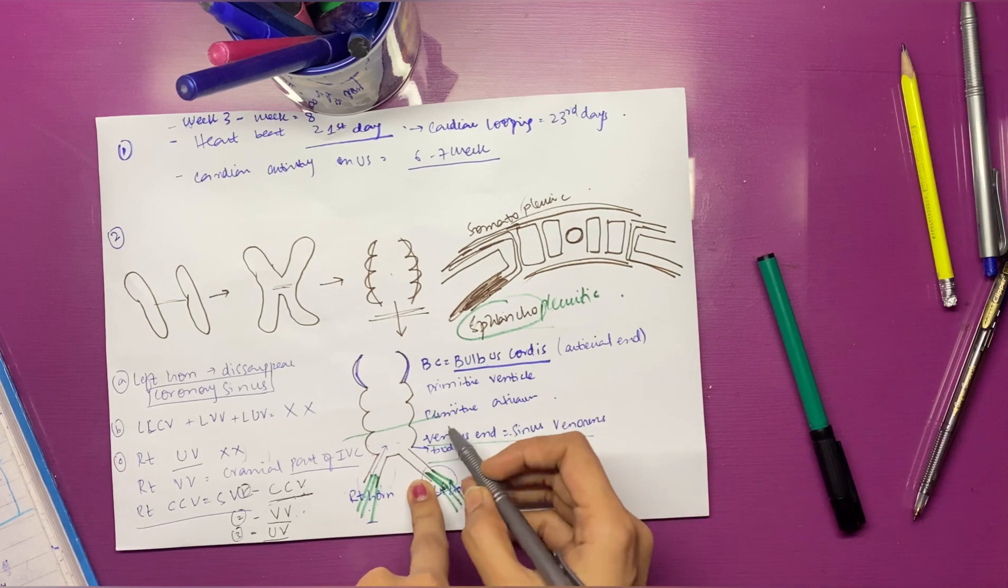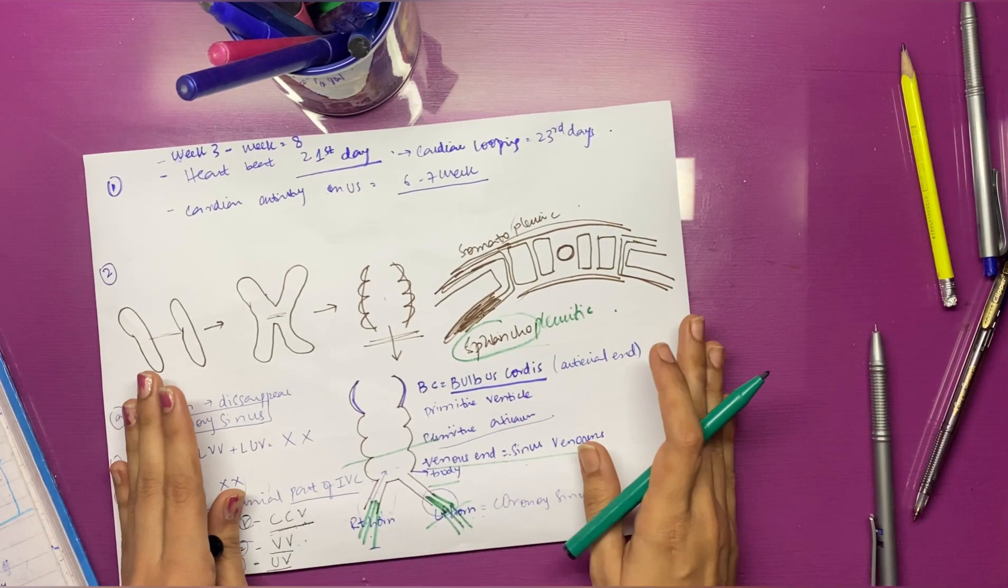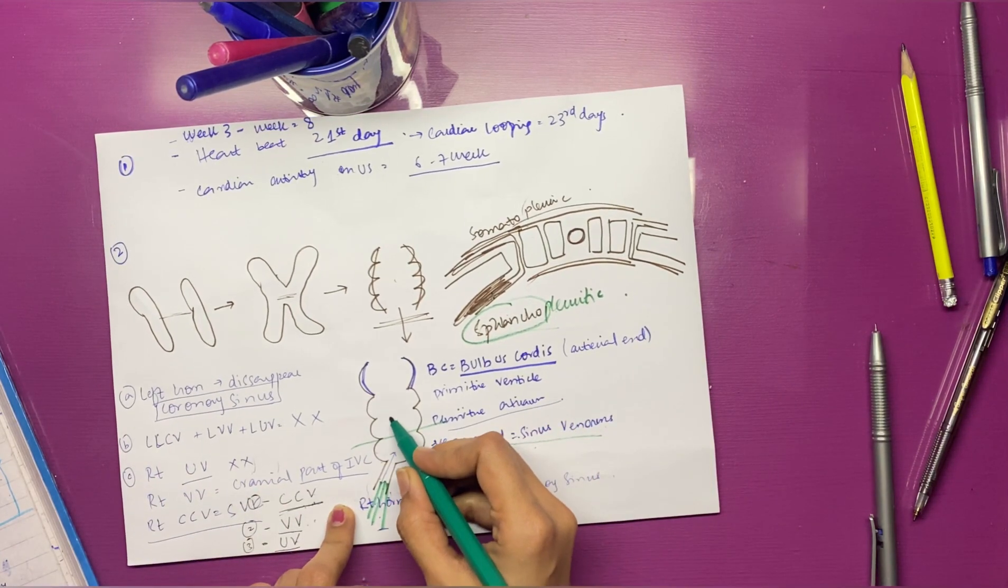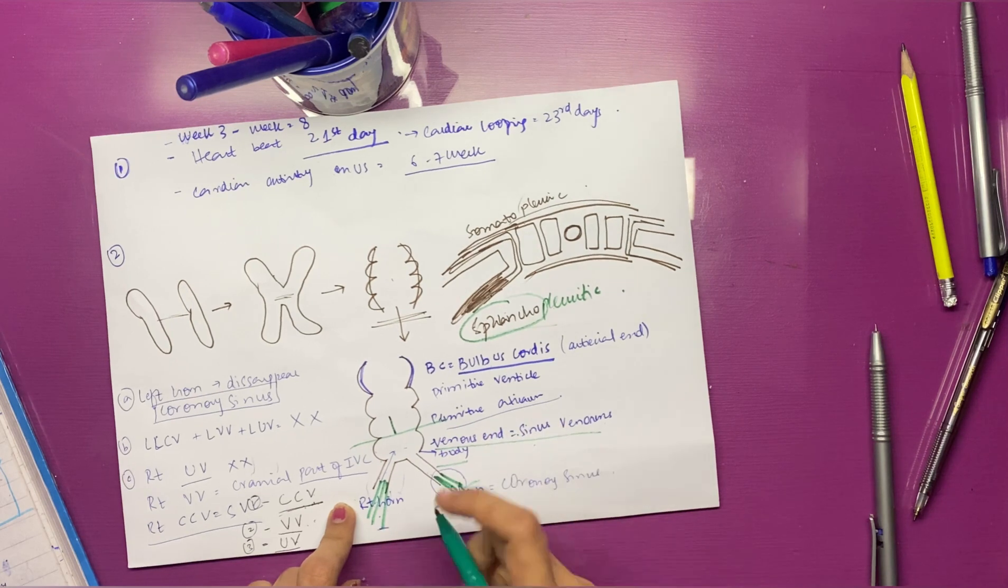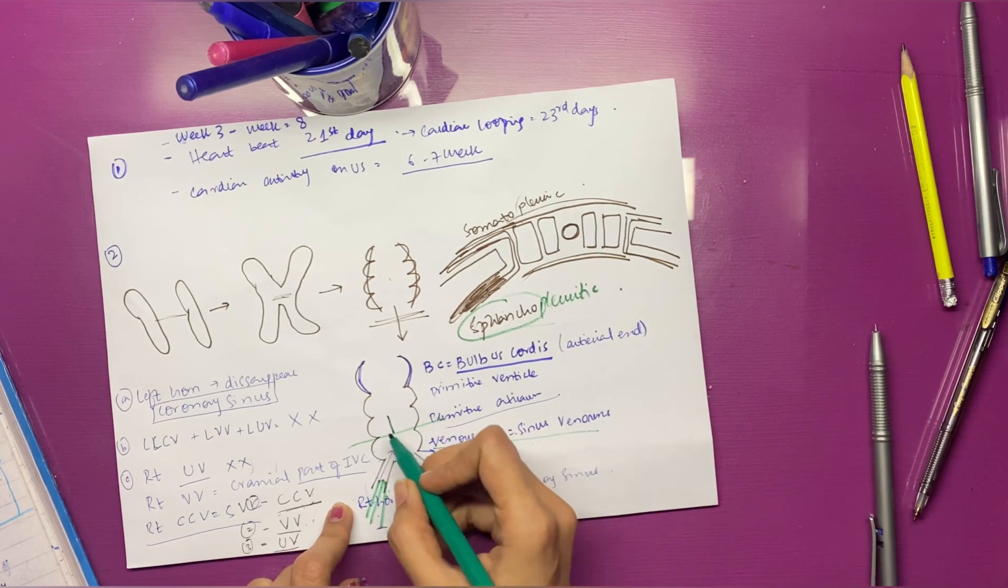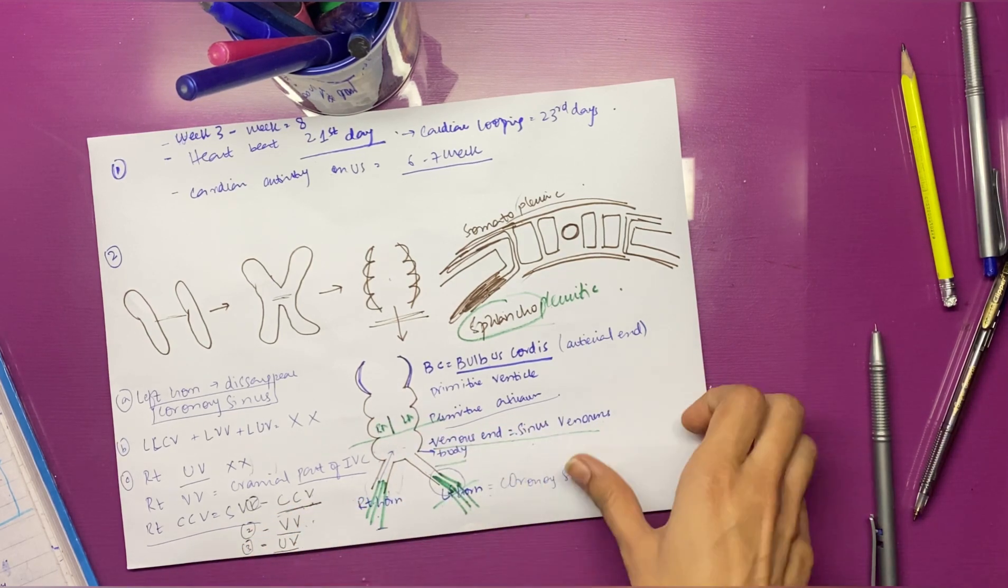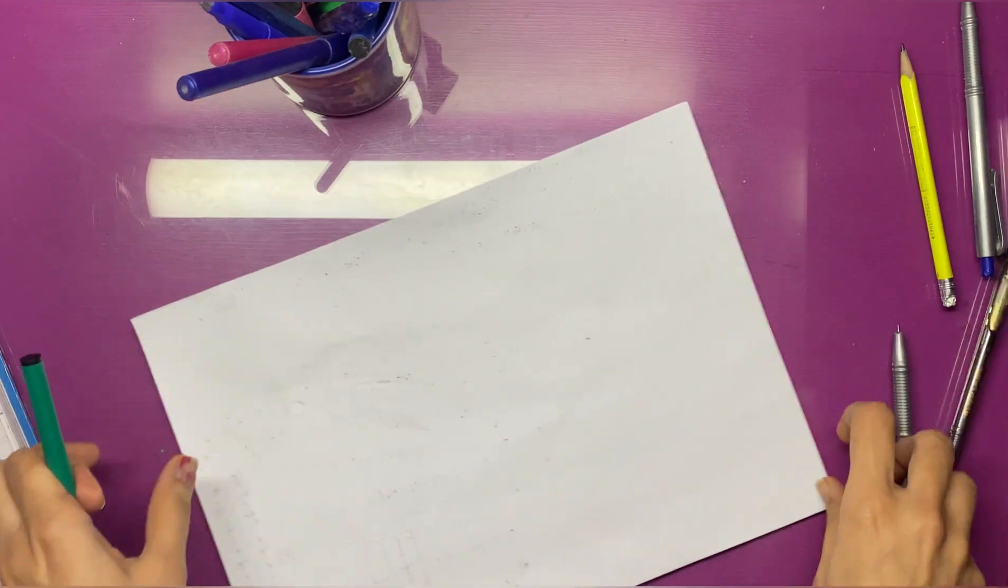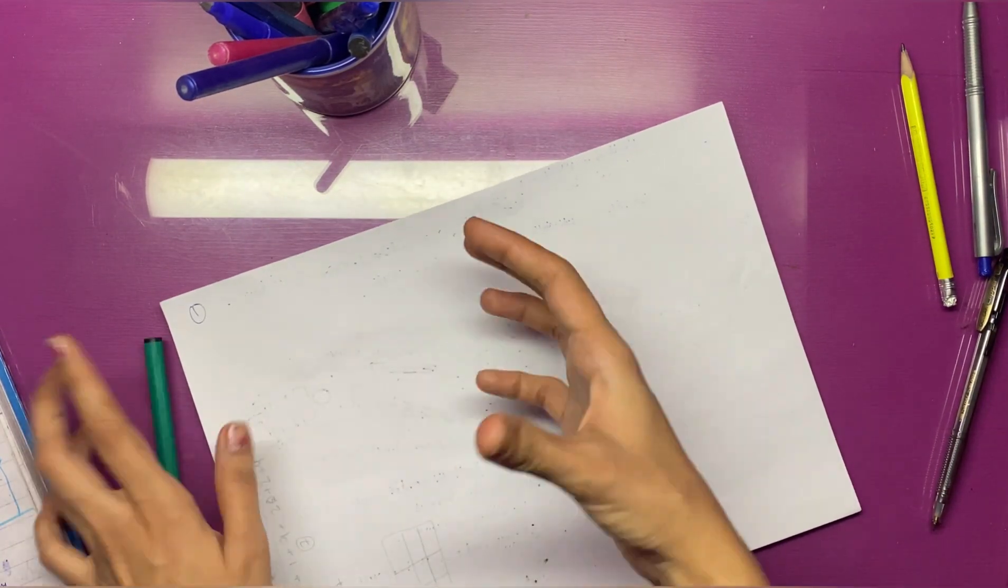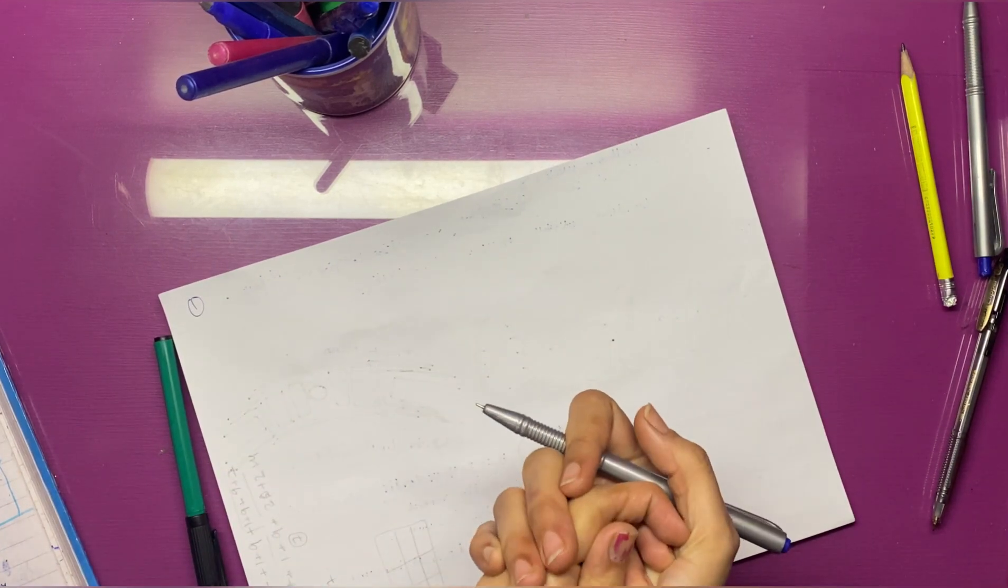Now we're going to discuss what happens to the primitive atrium. The primitive atrium is now divided into two parts: one part is the right atrium and the other part is the left atrium. You have to remember two points regarding the primitive atrium. The most important first point is that when we talk about the atrium conceptually, embryologically we talk about two surfaces: the anterior part and the posterior part.